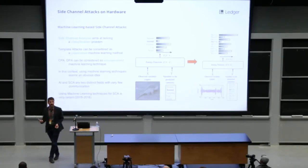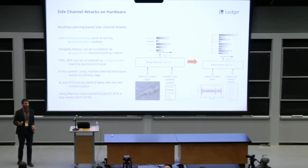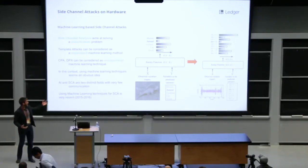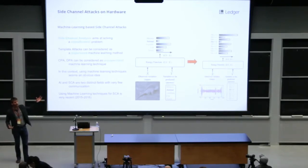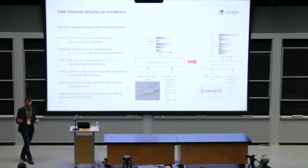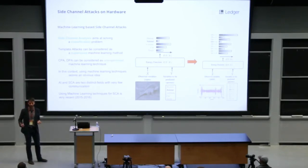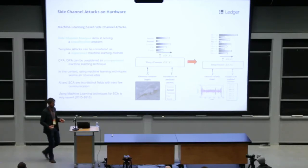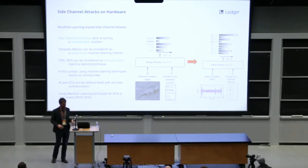To finish with side channel attacks, just a word on machine learning techniques. Side channel attacks aim at solving a classification problem, and machine learning as well. So instead of classifying images as human, animal, airplane categories, the idea is to classify power traces in value of key bytes categories. And so we can take advantage of all the research done in the AI field in order to improve the efficiency and effectiveness of side channel attacks. The convolutional neural networks, CNN, are very good for side channel attacks.